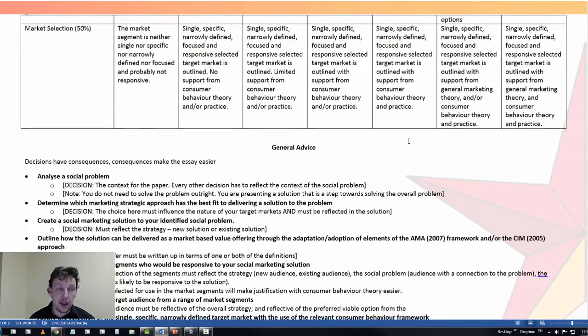The third phase and the bulk of the points, 50% of the points, come from the market selection section. And this section is dependent on the decisions that you make in the first two criteria. If you do not take the first two sequences to their full advantage, you will not be able to produce a single, specific, narrowly defined, focused and responsive target market.